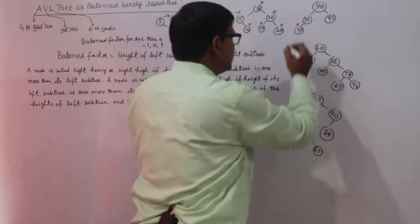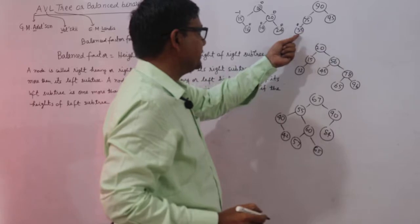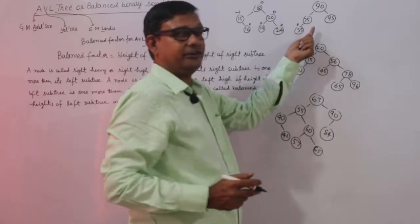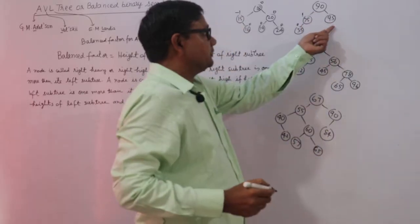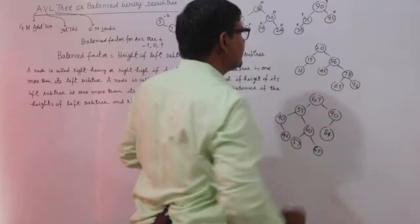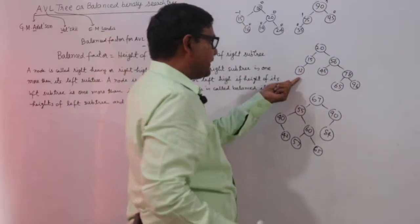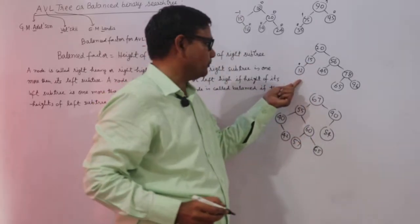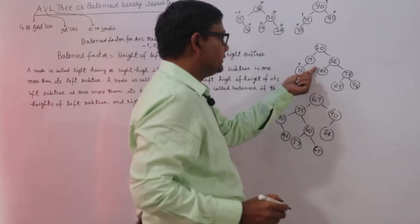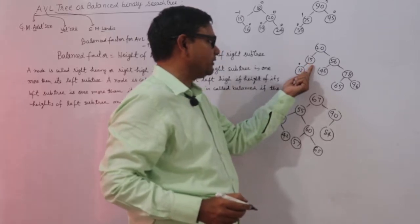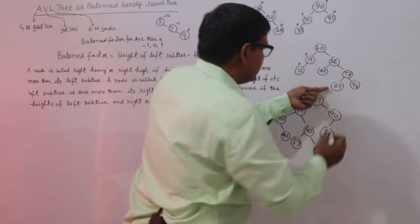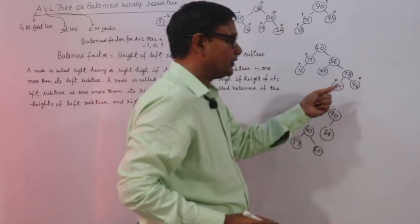This node's balance factor is 0 because height of left subtree is 0 and right subtree is also 0. For node having value 75, height of left subtree is 1 and height of right subtree is 0, so 1 minus 0 equals 1. This node's balance factor is 0. This node's balance factor is 1, that is 2 minus 1 equals 1. Balance factor of node having value 12 will be 0 because left subtree height is 0 and right subtree height is 0. This node has balance factor 1 because height of left subtree is 1 and height of right subtree is 0. Node 78 has 1 minus 1 equals 0.